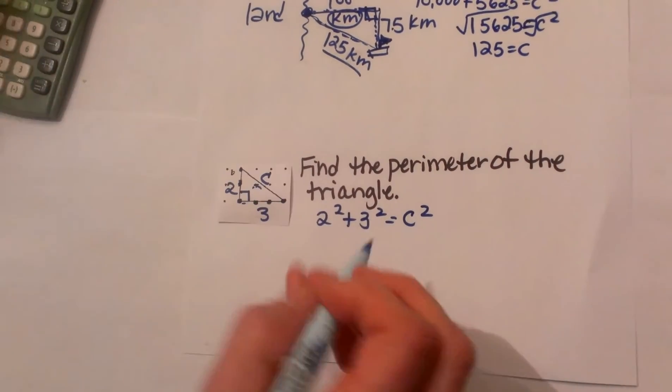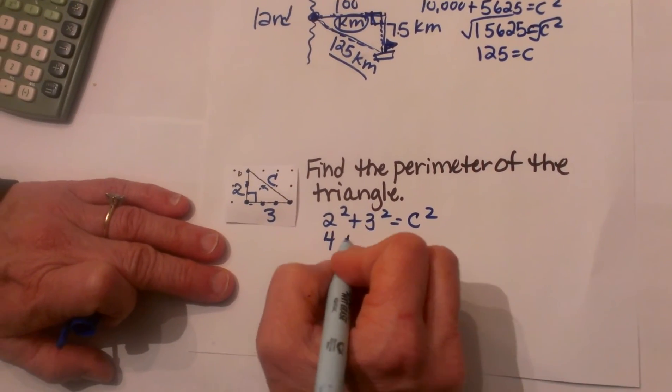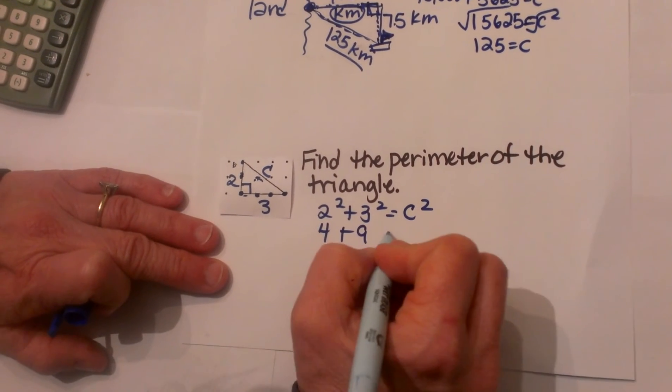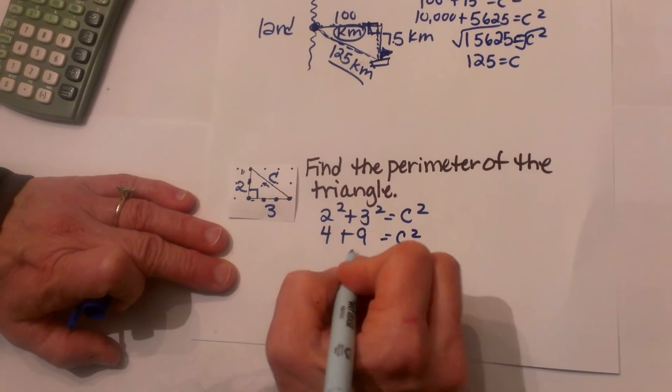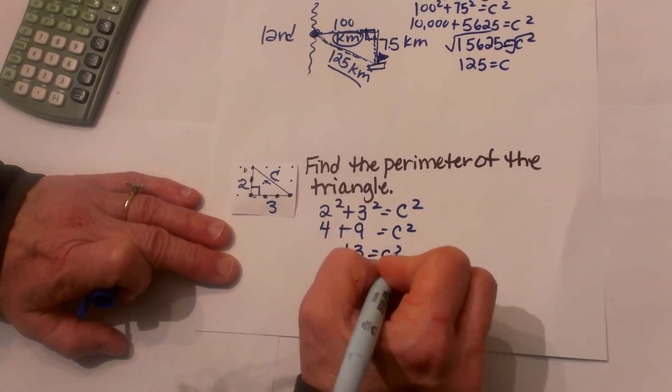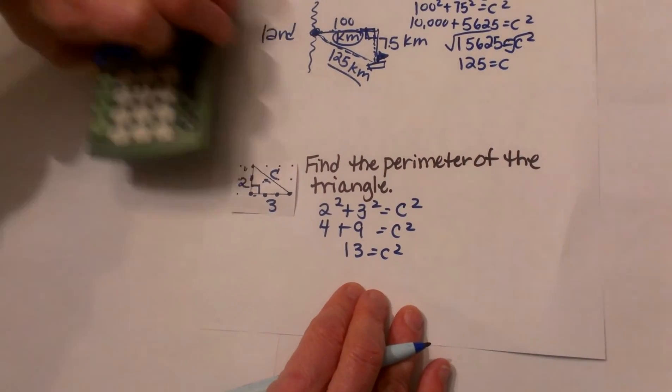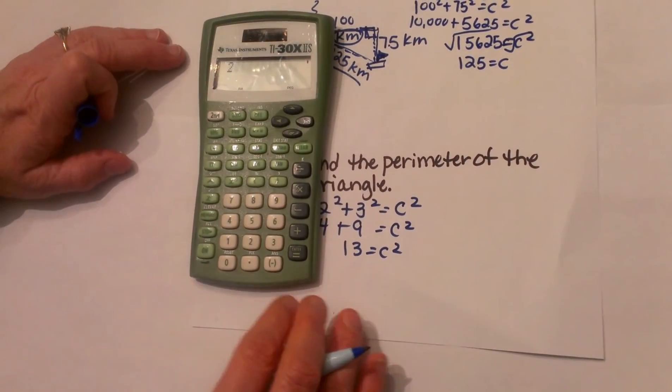So 2² we know is 4, 3² we know is 9, and that is equal to c². So 13 is equal to c². Let's convert that to a decimal because we now have to take the square root.